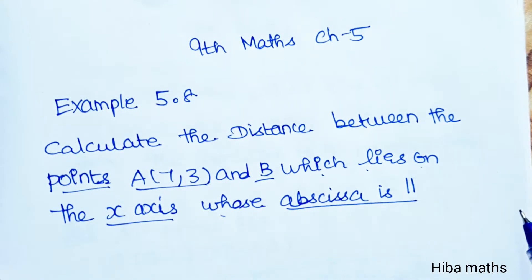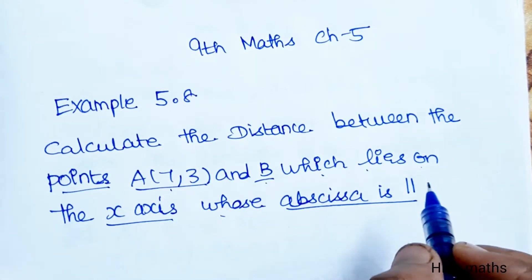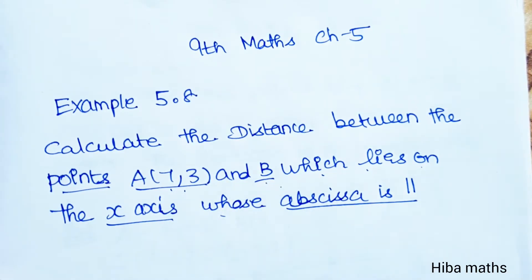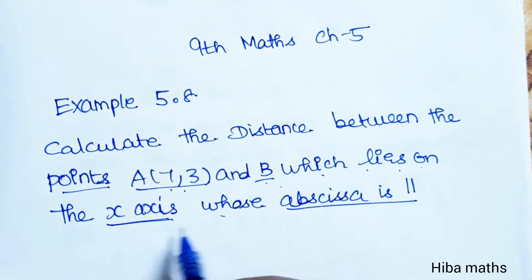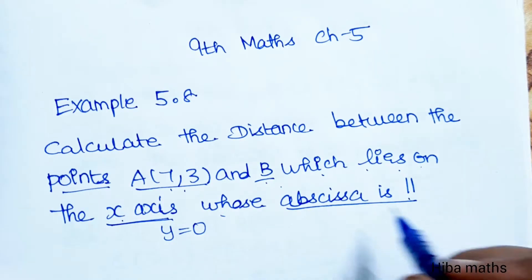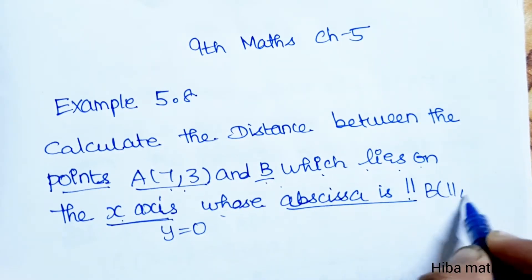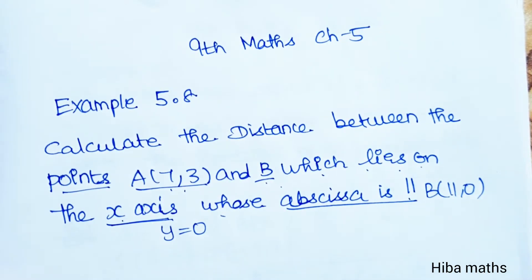The abscissa is 11. Point A is given, but point B lies on the x-axis, so the y value is 0. The x-axis value is 11, so B point is (11,0).